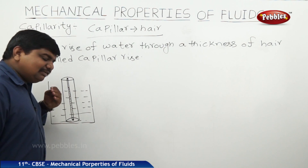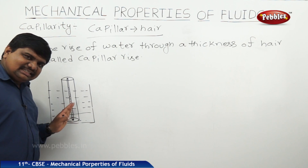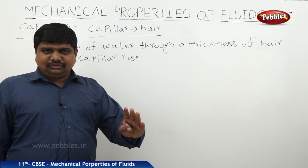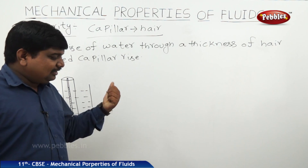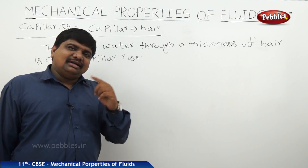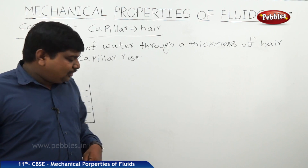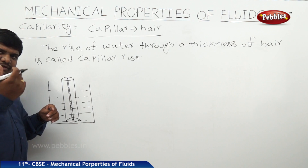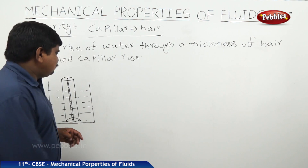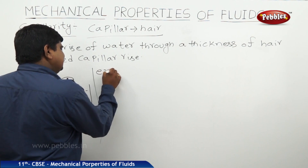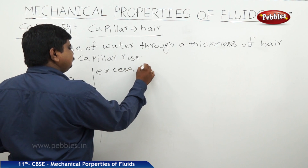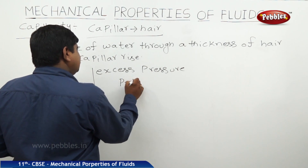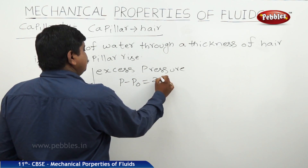How much height will the water reach? What is the reason for the rise in the water level? It is nothing but the change in pressure. That is why in previous cases we discussed the change in pressure inside a liquid and bubble. The excess pressure in a circular cross-section is P minus P-naught, equal to 2T by R.